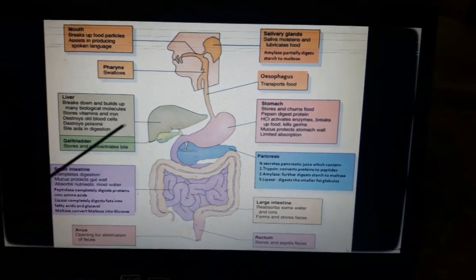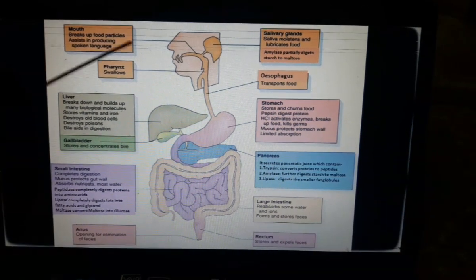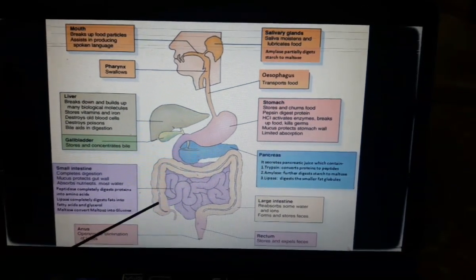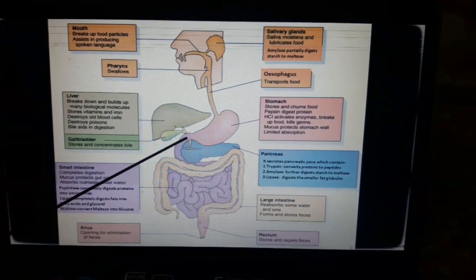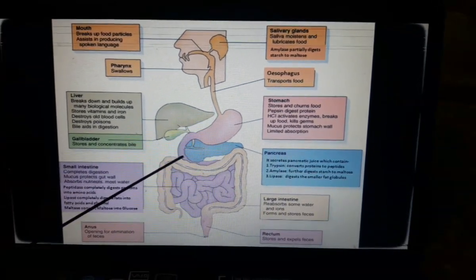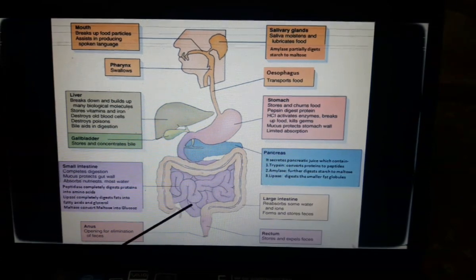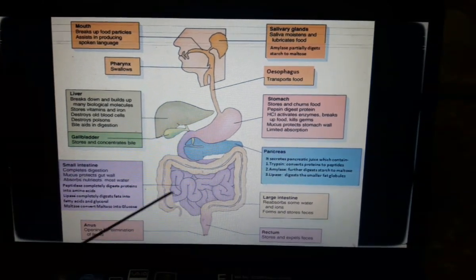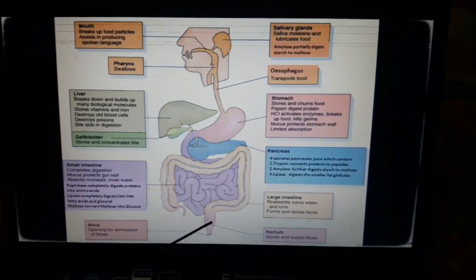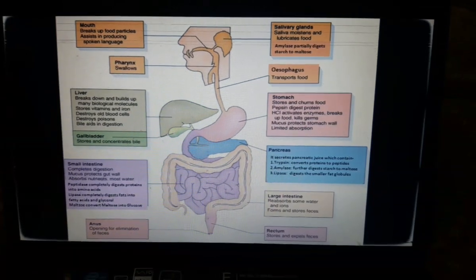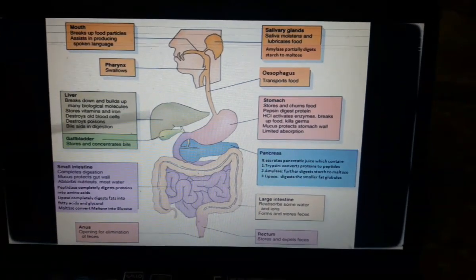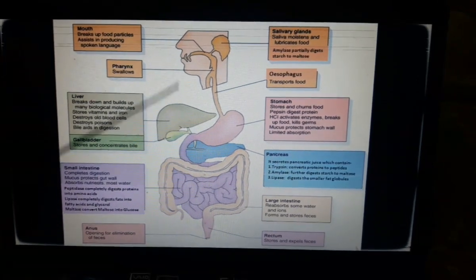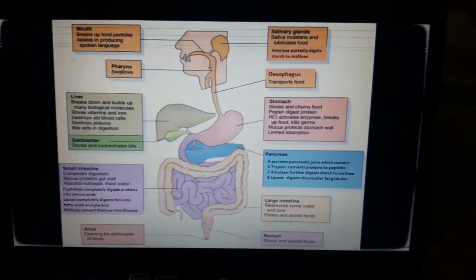In this way, many such sphincters are present in the elementary canal. The food moves from the stomach to the small intestine and then from the small intestine to the large intestine. From the rectum to the anus, all these sphincters are present. What is the function of the stomach during this digestive process?